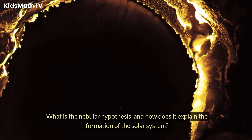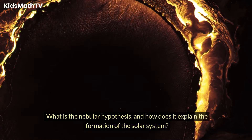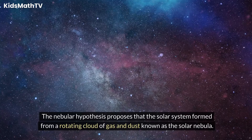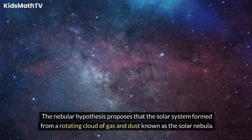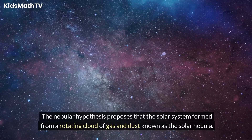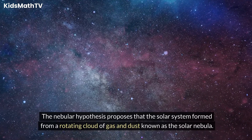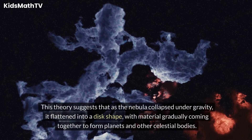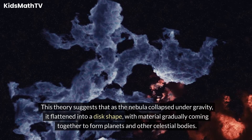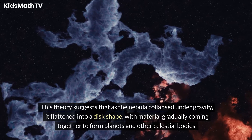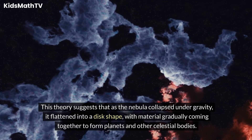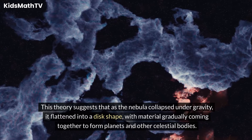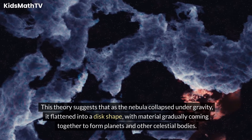The nebular hypothesis proposes that the solar system formed from a rotating cloud of gas and dust known as the solar nebula. This theory suggests that as the nebula collapsed under gravity, it flattened into a disk shape, with material gradually coming together to form planets and other celestial bodies.